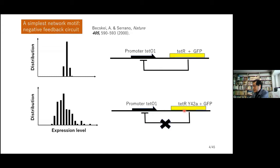But when the 42nd tyrosine of TetR is replaced by alanine, the binding affinity of this mutant TetR to TetO becomes weak, so the negative feedback loop is disrupted. This is the reported distribution of the number of cells showing certain fluorescence intensity — the distribution of the synthesis level of TetR. When the negative feedback is lost, the distribution is wide with large fluctuation. But when the negative feedback is working, the distribution is narrow with smaller fluctuation. This is very reasonable.